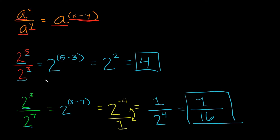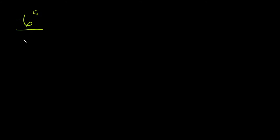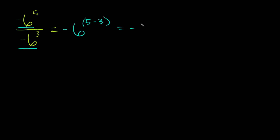Now let's do some negative base examples. If I had negative 6 to the 5th divided by negative 6 to the 3rd, we have the same base — negative 6 — so we keep it and subtract the exponents: 5 minus 3 equals positive 2. So this is negative 6 squared, which is negative 6 times negative 6. A negative times a negative is positive, and 6 times 6 is 36, so the answer is positive 36.